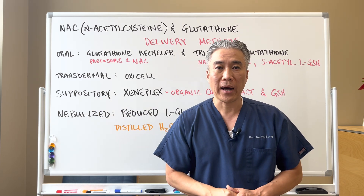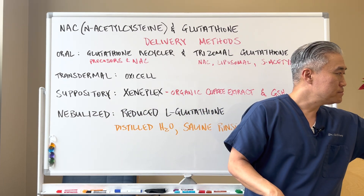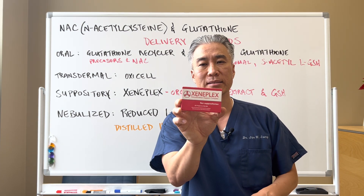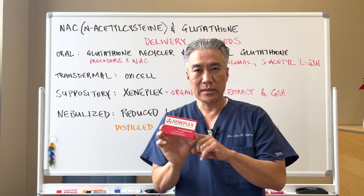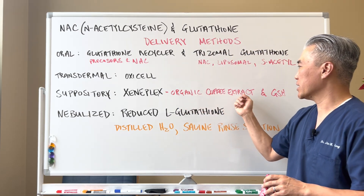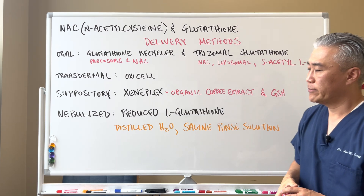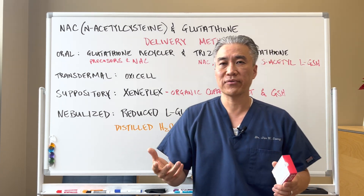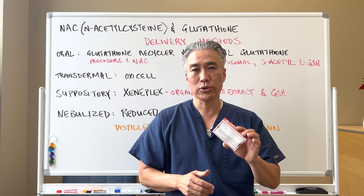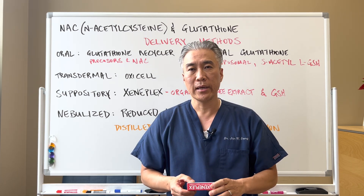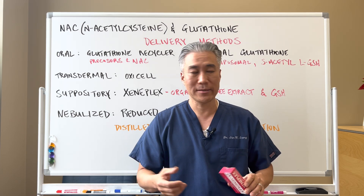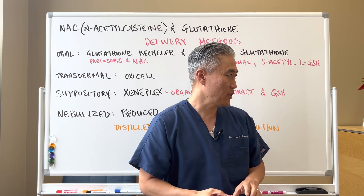You can also use a suppository for glutathione. There's a product called Xenoplex, which is a suppository that contains organic coffee extract and glutathione. After having a normal bowel movement and evacuating your bowels, you can use the suppository to help boost glutathione and bypass the gut. That's another delivery method.